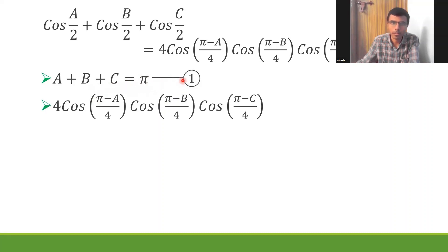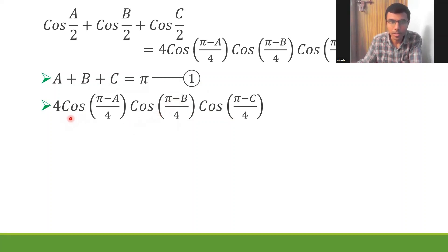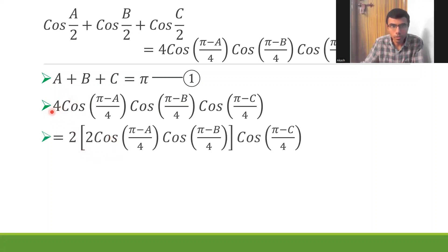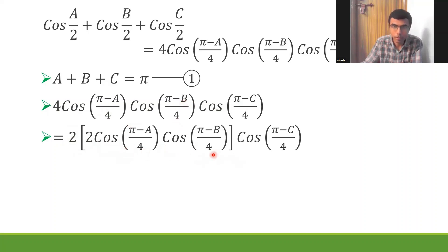I'm marking A + B + C = π as equation (1) so I can use it wherever needed. Now this is my RHS — pay attention carefully. I'm going to write 4 as 2 × 2, and I'm going to send one 2 inside the bracket and group cos(π−A)/4 · cos(π−B)/4 as a product, with cos(π−C)/4 remaining outside.